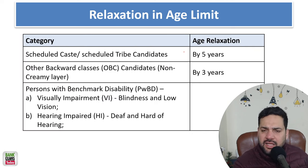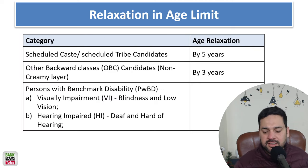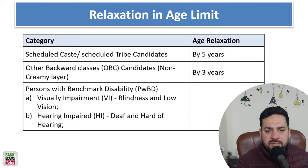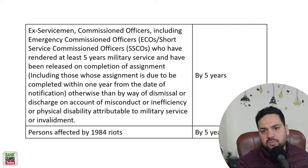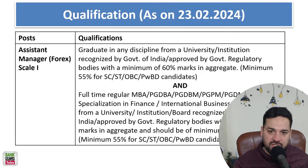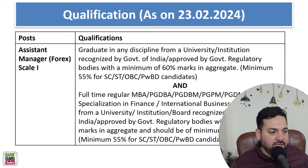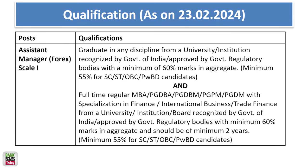Age relaxation is provided to reserved category candidates — SC/ST, PWD, people with disabilities — the same relaxation available in other posts is available here too. For educational qualification, graduation in any discipline is required, with 60% marks, and 55% for SC/ST, PWBD and OBC category candidates.